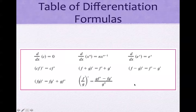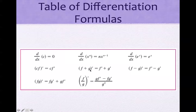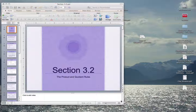Here is the table of differentiation formulas discussed in previous chapters. The derivative of a constant is zero; x to the n is n times x to the n minus 1; derivative of e^x is e^x. If a constant is on the inside, pull it outside and multiply by the derivative. For f plus g, take f' plus g'. For f minus g, take f' minus g'. The product rule: first times derivative of the second, plus the second times derivative of the first. And so on with the quotient rule. That is it — thank you.